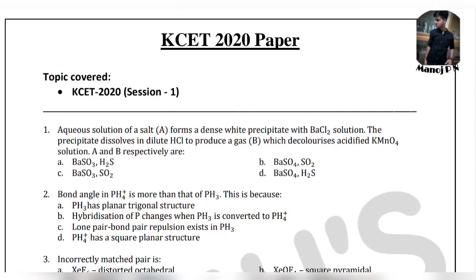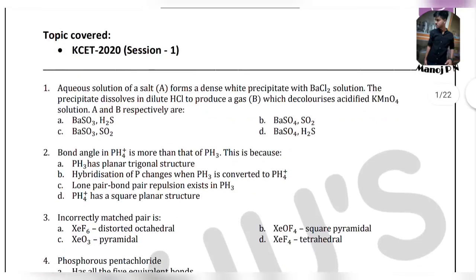First question: an aqueous solution of salt A forms a dense white precipitate with BaCl2 solution. The precipitate dissolves in dilute HCl to produce a gas B which decolorizes acidified KMnO4 solution. What are A and B respectively? The options include BaSO3, BaSO4, and related compounds — let's try to solve this.